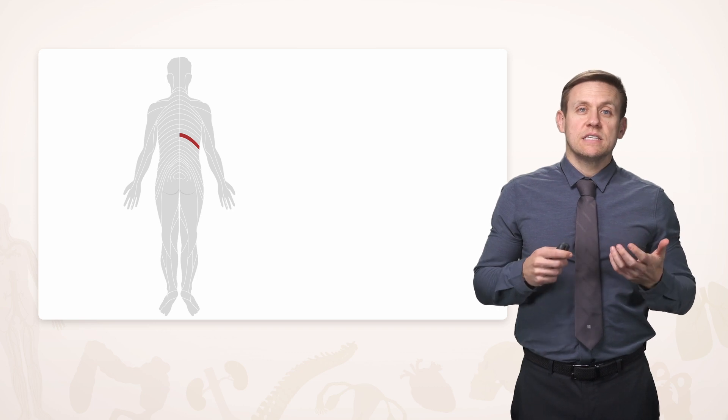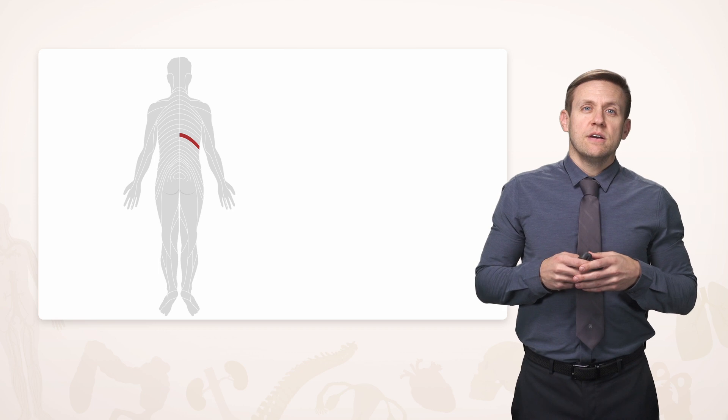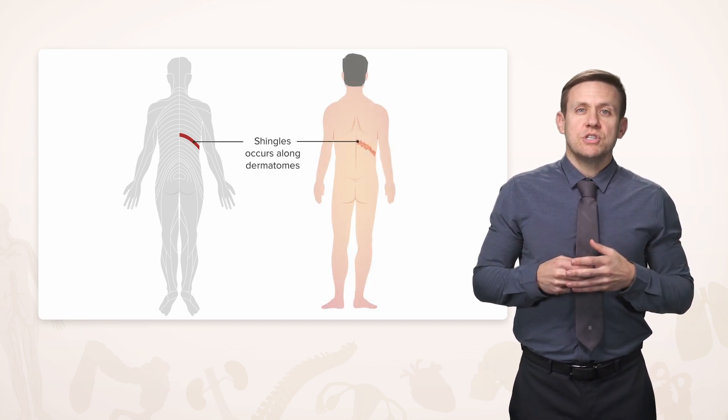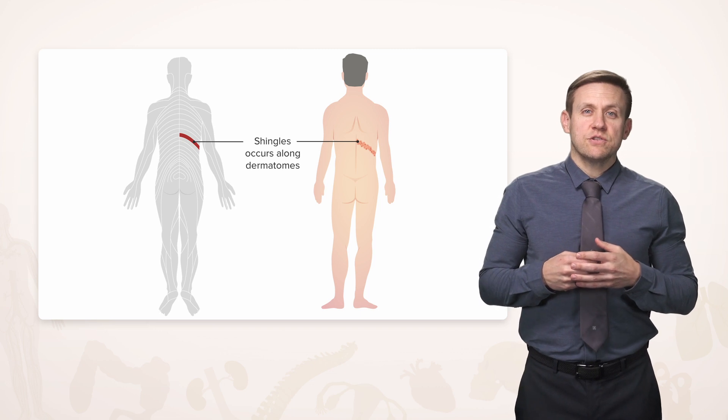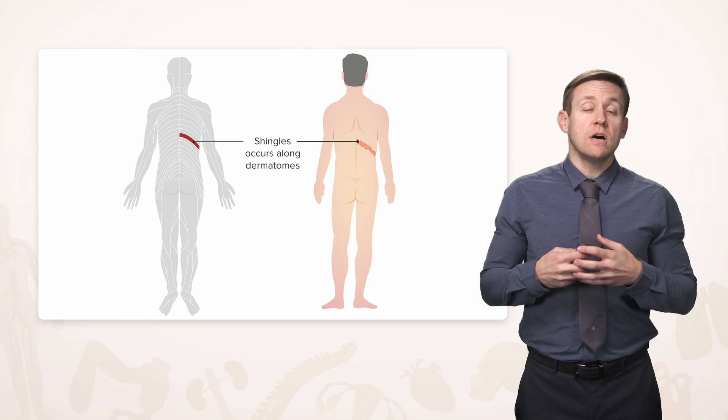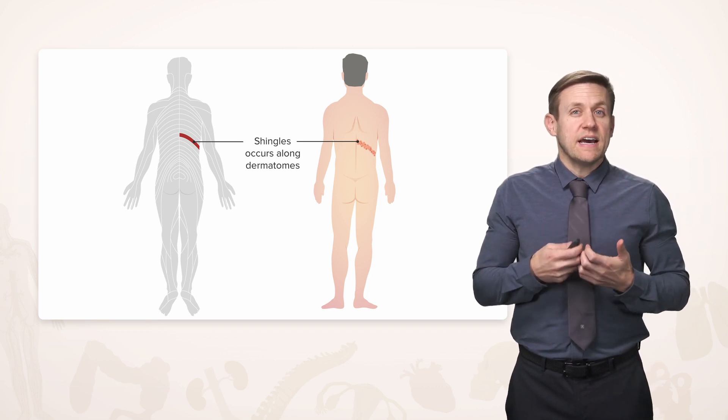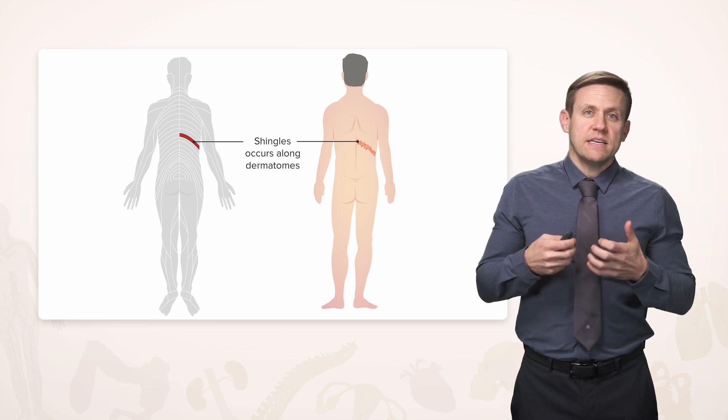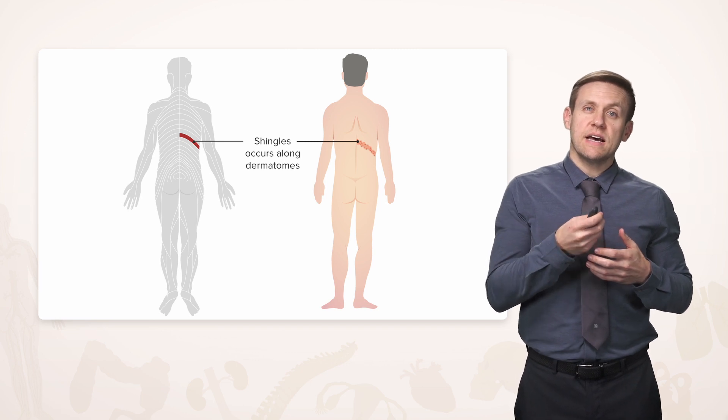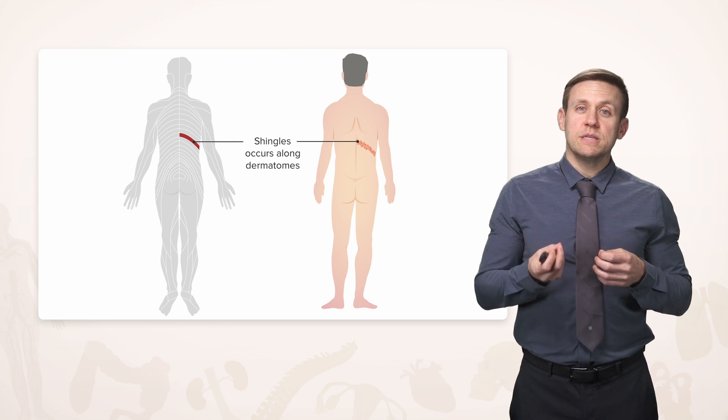Dermatomes have a lot of clinical significance beyond just testing for sensory deficits. For example, there's something called shingles, which is a virus that's actually a reactivation of a virus that lives inside, usually for a long time, of a nerve. It can be dormant inside of this nerve without any symptoms until it's reactivated as shingles. And when it does so, because it's inside a given nerve, it will outline the area of a dermatome for you.